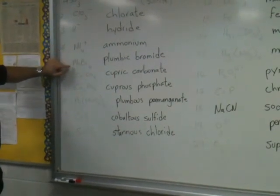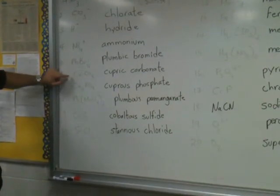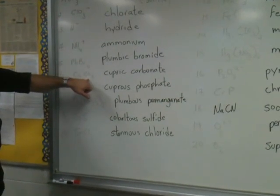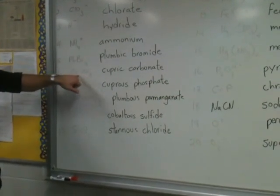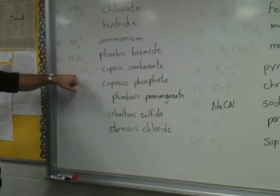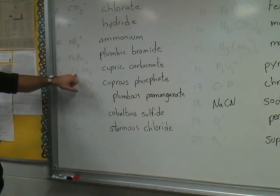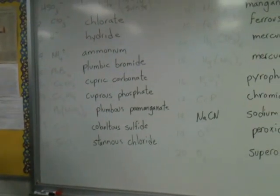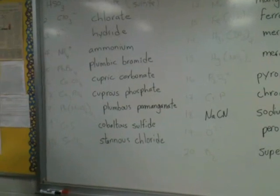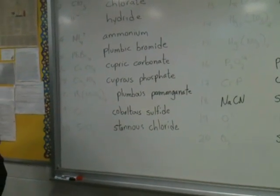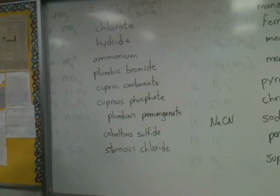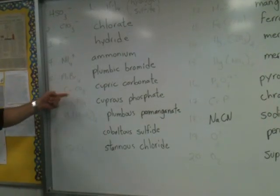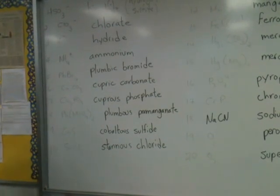Ammonium, plumbic bromide, cupric carbonate. How do we know it's cupric? Because carbonate is a polyatomic ion with a negative two charge, so for one copper atom to counterbalance that negative two charge, it's got to be plus two. Plus two is the higher charge possibility that copper can take on — copper one has a plus one charge, whereas copper two has a plus two charge. This is the plus two copper, so it's called cupric carbonate, according to the old naming system.